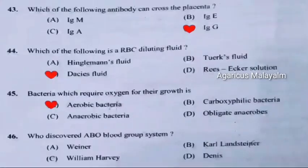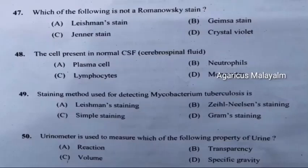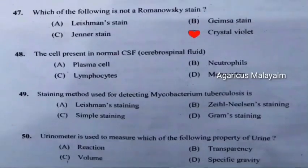Question 46: Who discovered the ABO blood group system? Correct answer is option B, Karl Landsteiner. Question 47: Which of the following is not a Romanowski stain? Correct answer is option D, crystal violet.